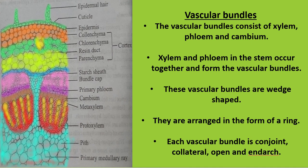Conjoint means the xylem and phloem originate at the same radius. Collateral means the phloem is positioned outer to the xylem. Open means the vascular bundle contains cambium cells. Exarch means the metaxylem is towards the peripheral region and the protoxylem is towards the inner side of the stem, towards the pith.